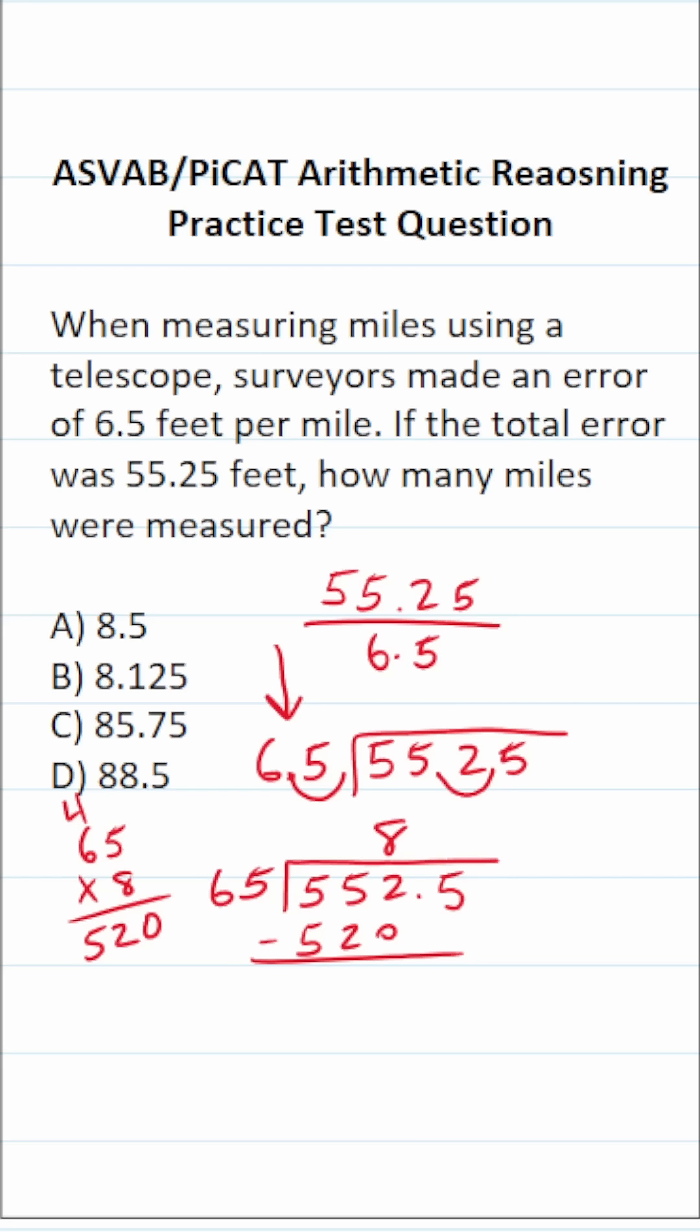Let's subtract this out: 2 minus nothing is 2, 5 minus 2 is 3, 5 minus 5 is nothing. We're going to drop down this 5 and bring the decimal into our answer. Let's keep working this out.